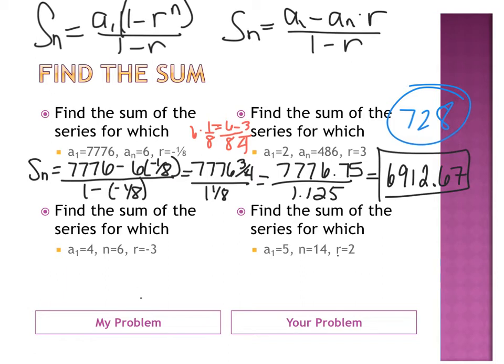Let's look at the next problem. Find the sum for which A1 is 4, N is 6, and R is negative 3. Which equation uses A1, N, and R? The first equation. So, let's plug in our information. S of 6. It's not SN, because I know N equals 6. So, we're using A1 for 1 minus negative 3 to the 6th power over 1 minus negative 3.